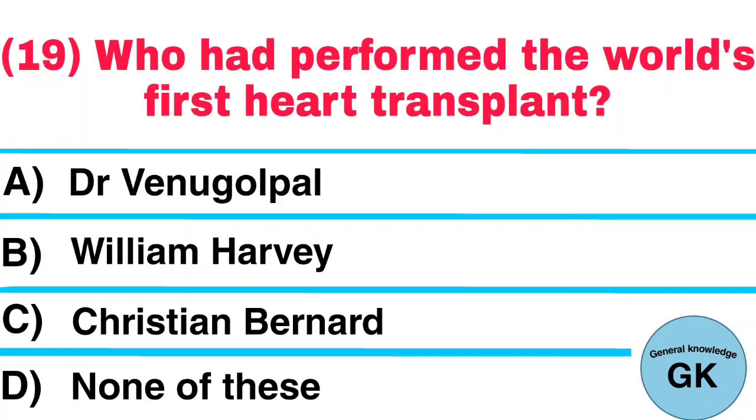Question number 19. Who had performed the world's first heart transplant? A. Dr. Venu Golpal. B. William Harvey. C. Christian Bernard. D. None of these. Answer: Christian Bernard.